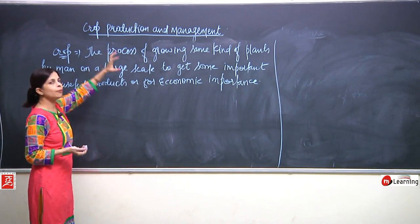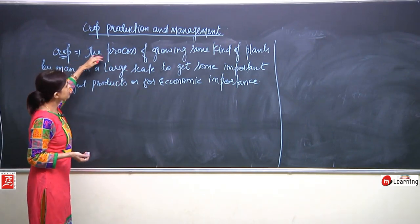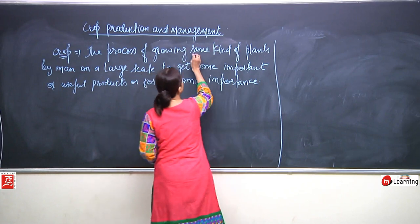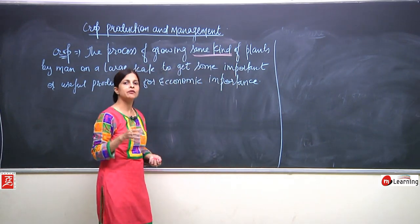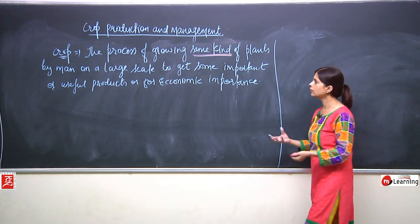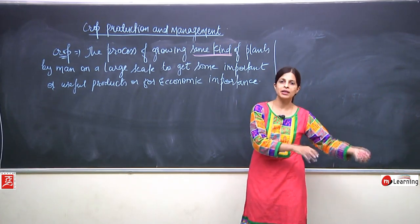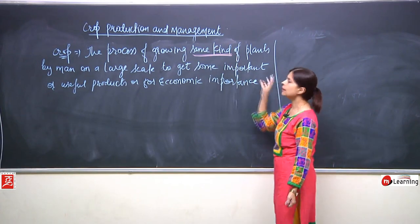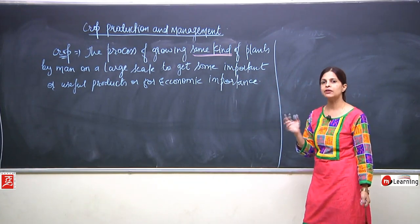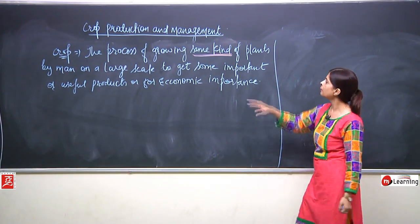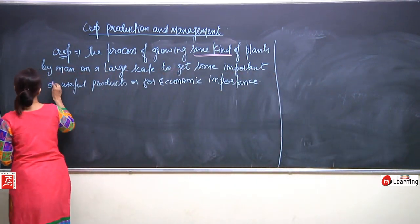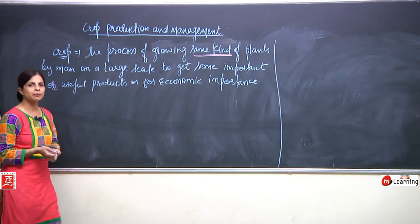Here we are discussing what a crop actually is. The process of growing same kind of plants by men — an important word here is 'same kind' — like in a particular area there should be the same kind of crops. You cannot have one wheat, then barley, then maize.